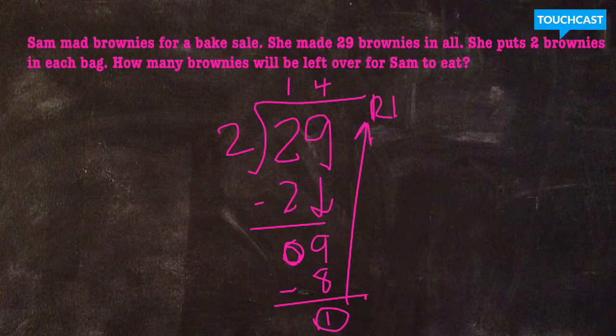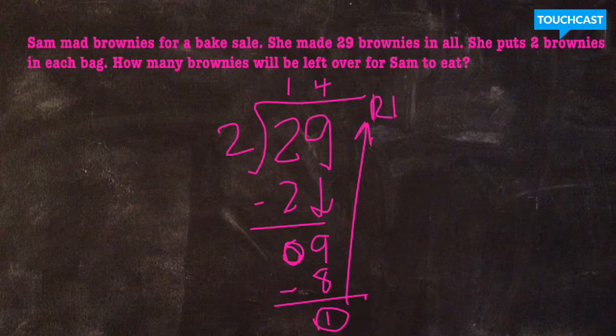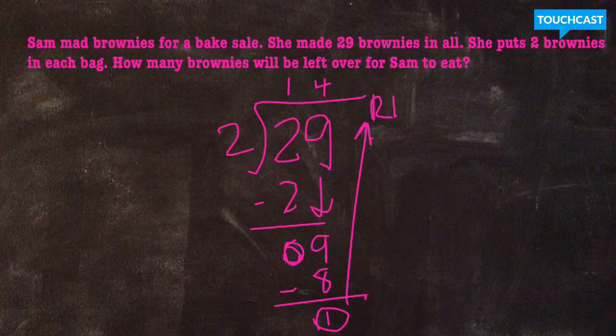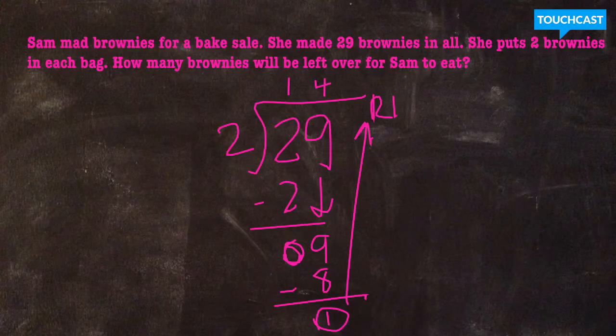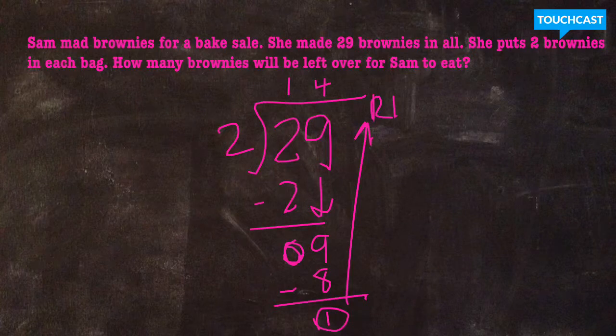So let's reread the question here. So it says, Sam made brownies for a bake sale. 29 brownies in all. If she puts two brownies in each bag, how many brownies will be left over for Sam to eat? Let's take a minute. The video is going to pause in a second and ask you a quiz question and determine which interpretation of the quotient and the remainder should you be using?